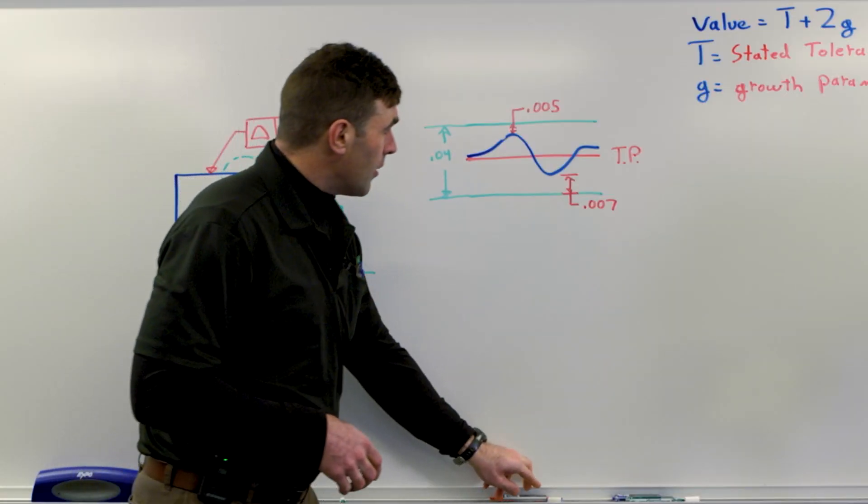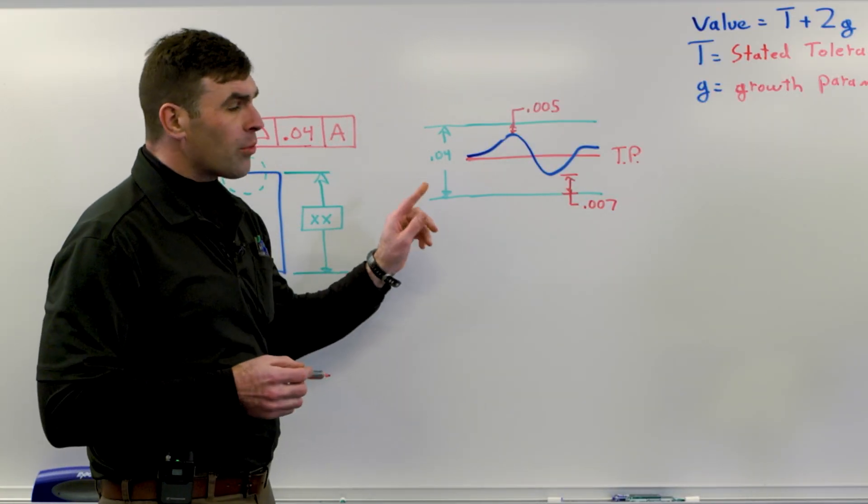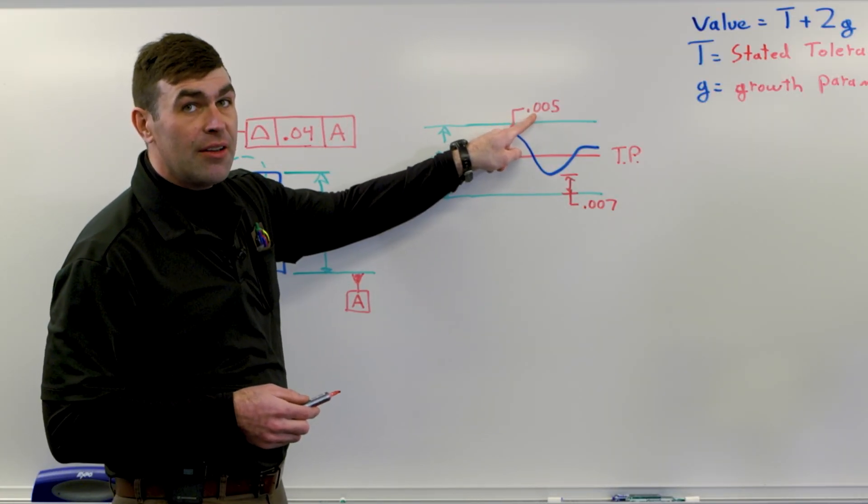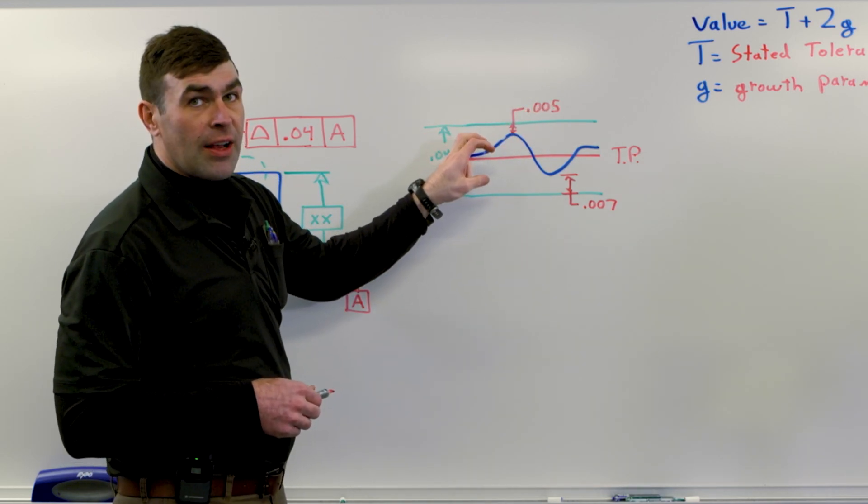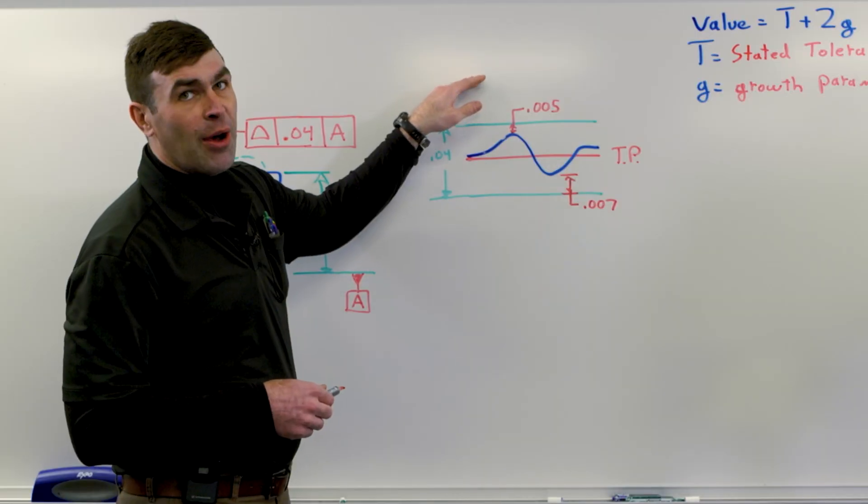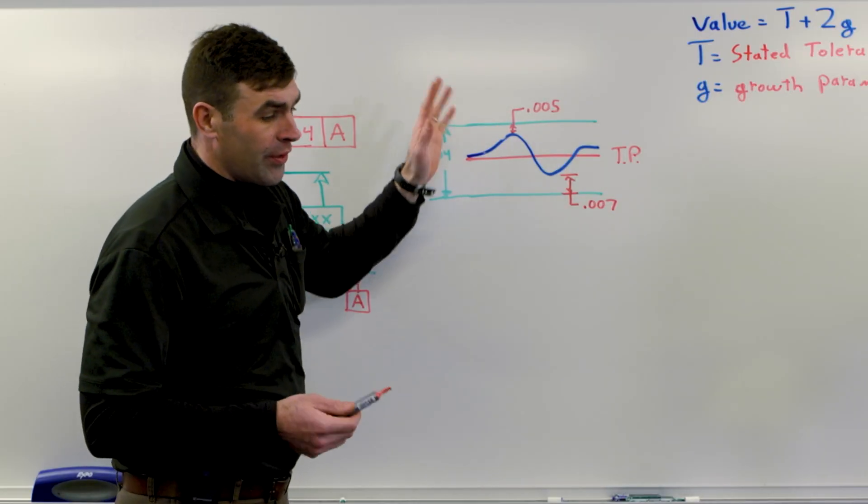So all we have to do here is remember that this is going to be a negative as our growth parameter. If it's inside of the tolerance zone boundary, it's negative. If it's outside, it's positive. And you'll hopefully see why in a second.